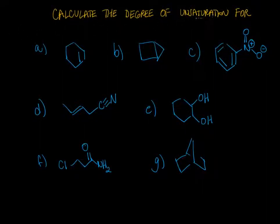Let's calculate the degree of unsaturation for each of these molecules. You could determine the molecular formula and plug it into a formula to calculate the degree of unsaturation for every single one of these compounds. But let's just have a fundamental understanding of what the degree of unsaturation is. The degree of unsaturation is equal to the sum of the rings plus pi bonds.